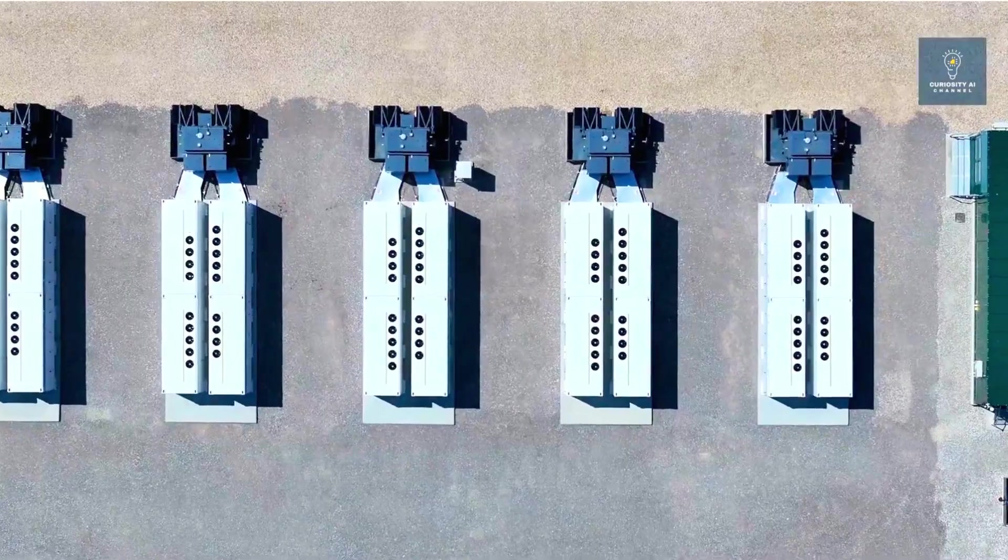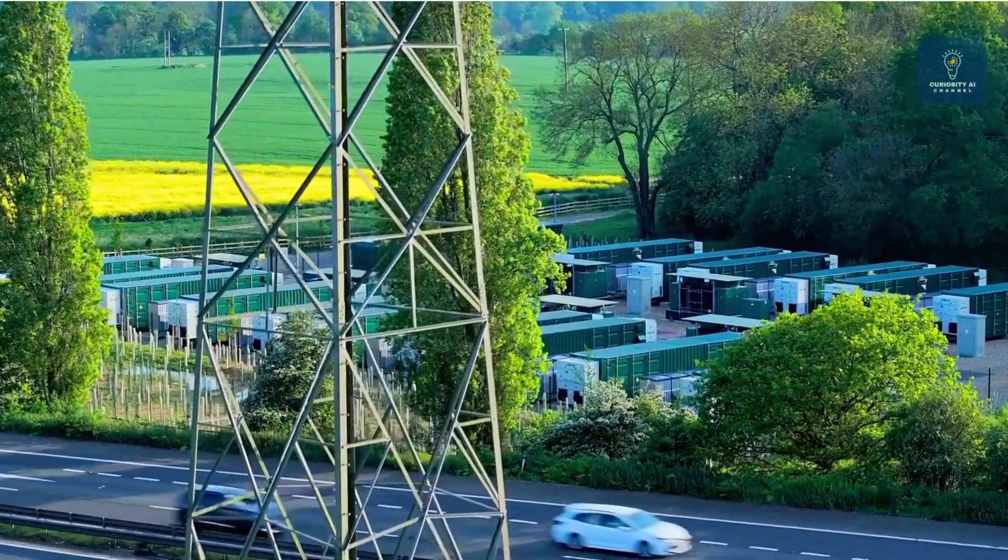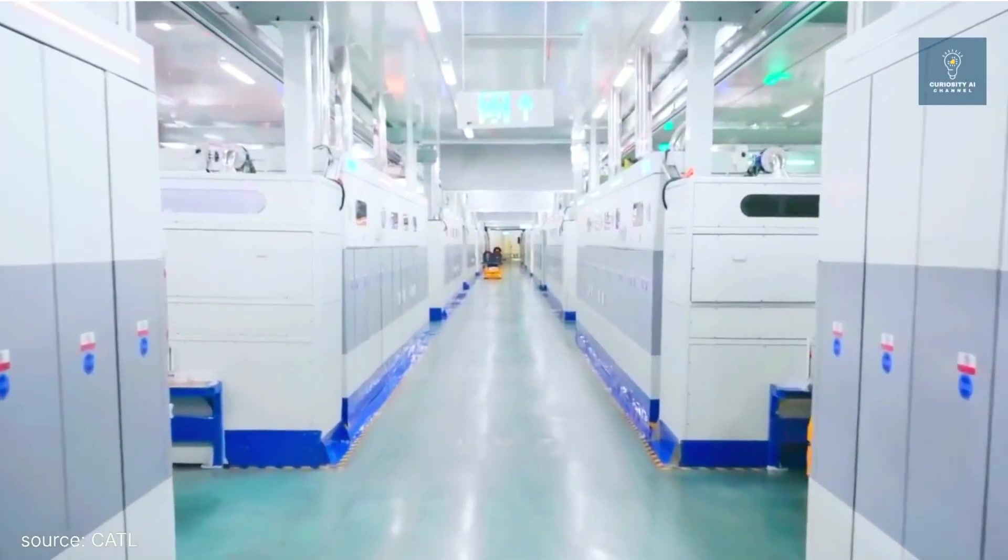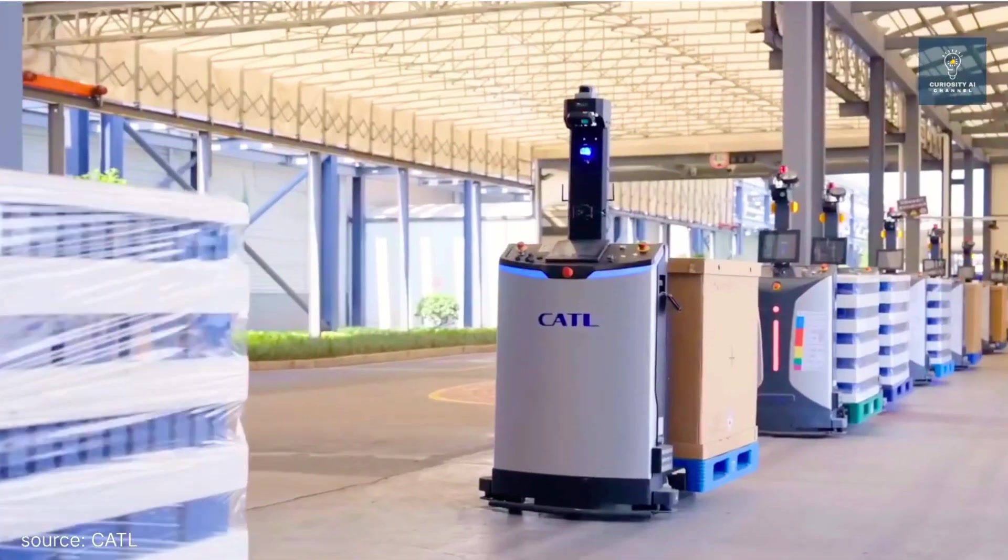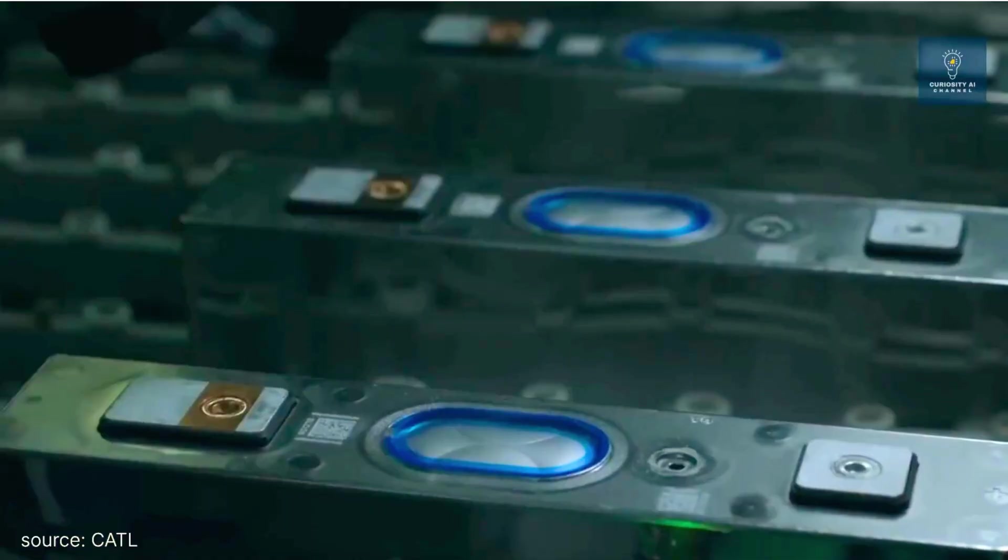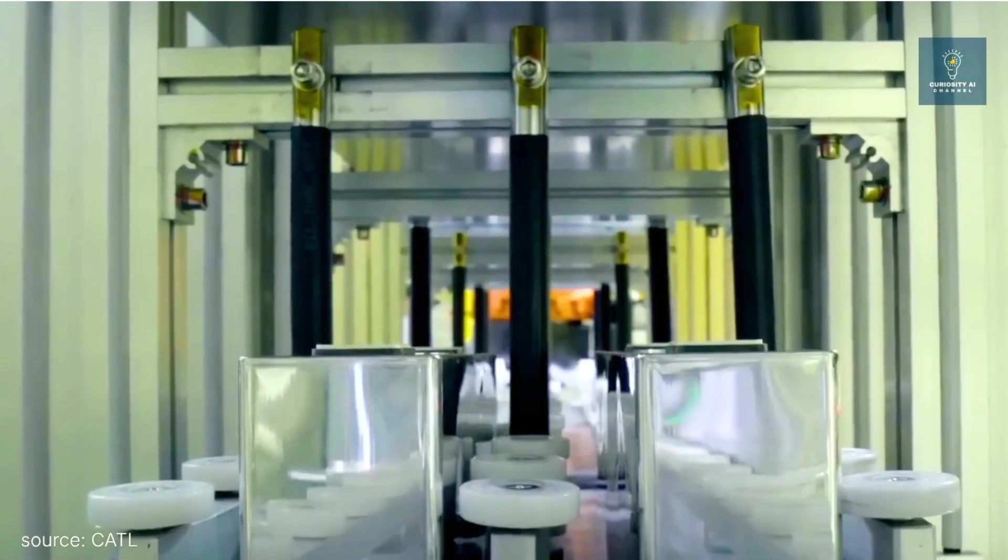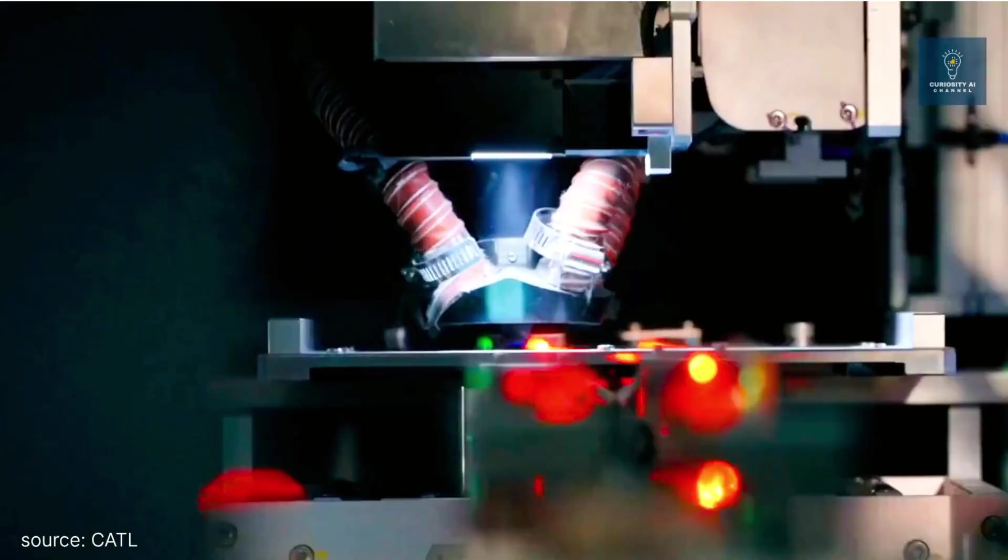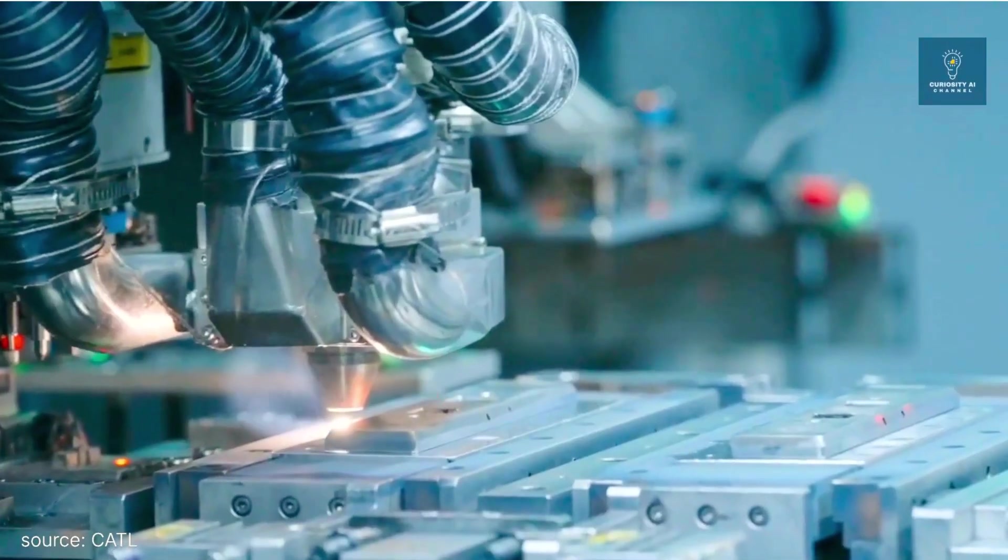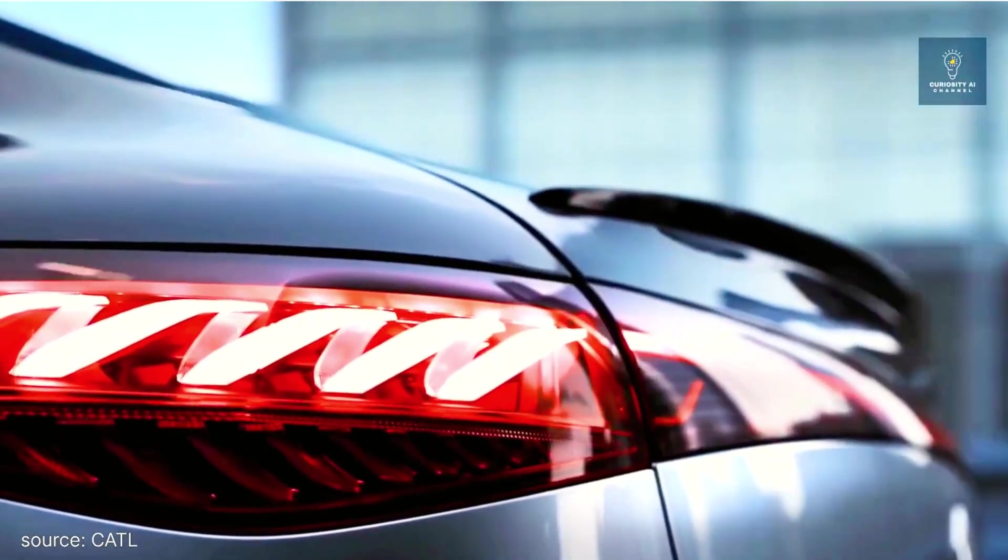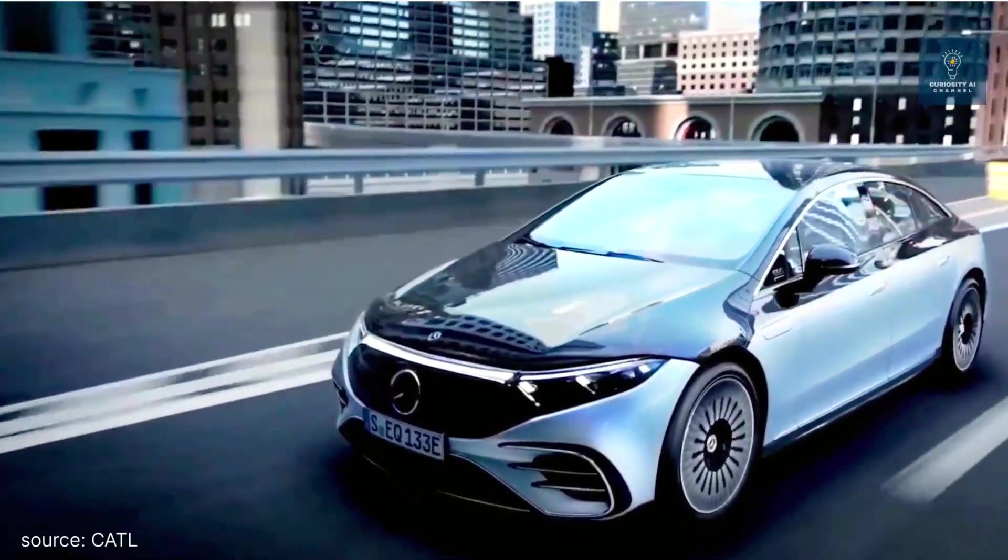Grid-scale storage could explode, making renewable energy more reliable and cost-effective. The timeline matters here. CATL says mass production begins in December 2025, which means the first vehicles with these batteries could reach markets in 2026. Early adopters will likely be commercial fleets and budget-conscious consumers in emerging markets, but the technology should trickle up to premium vehicles within a few years.